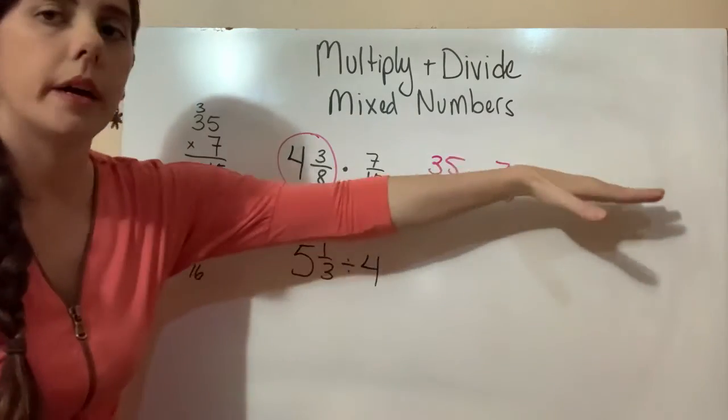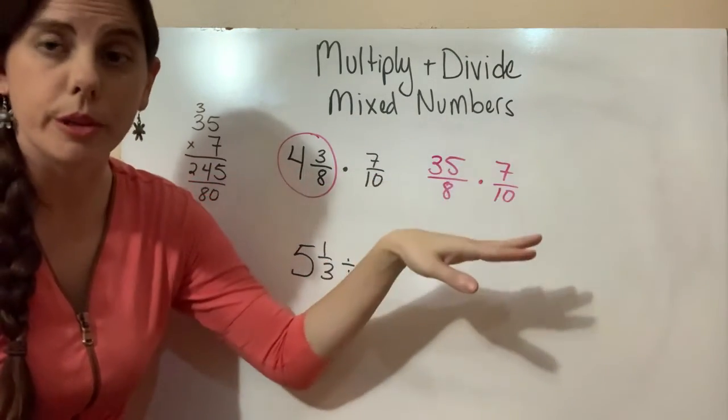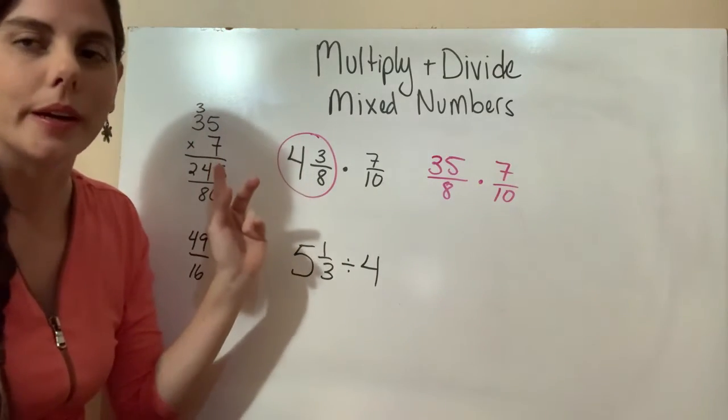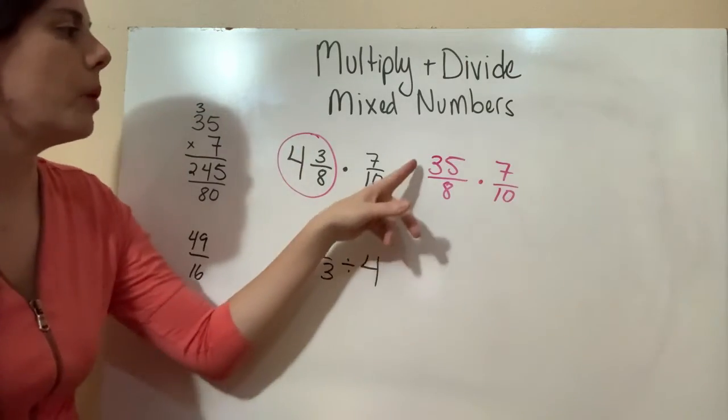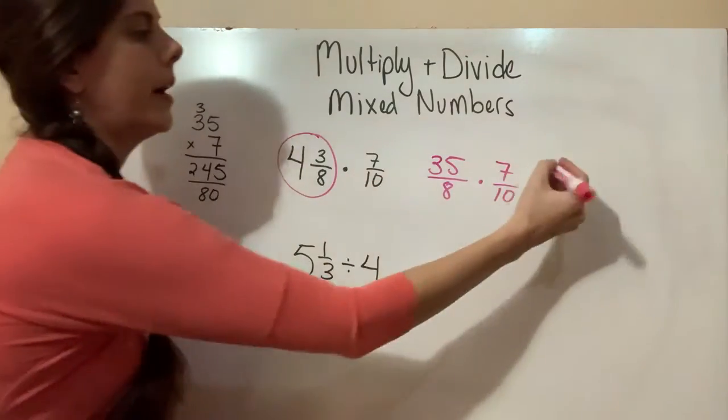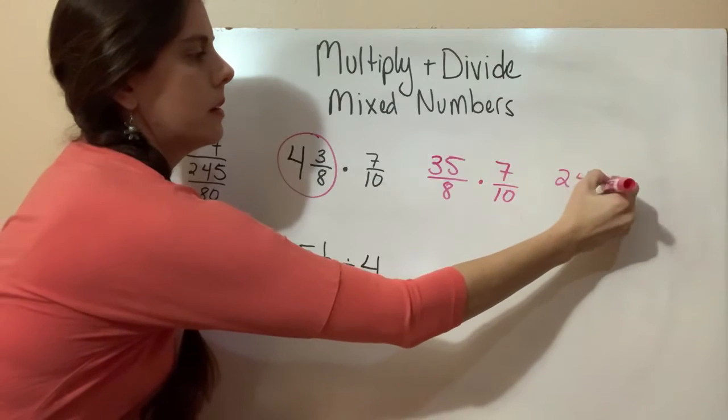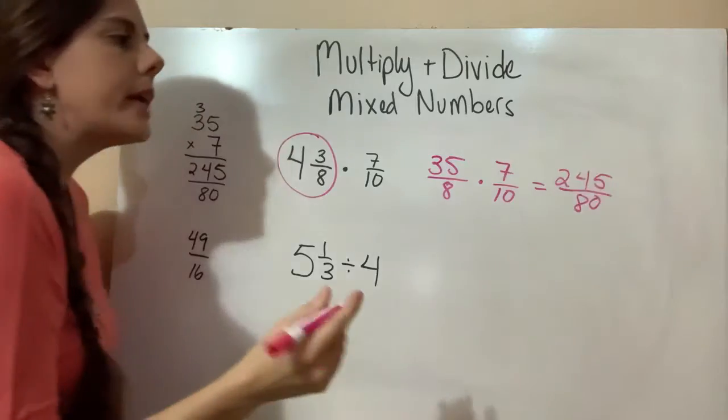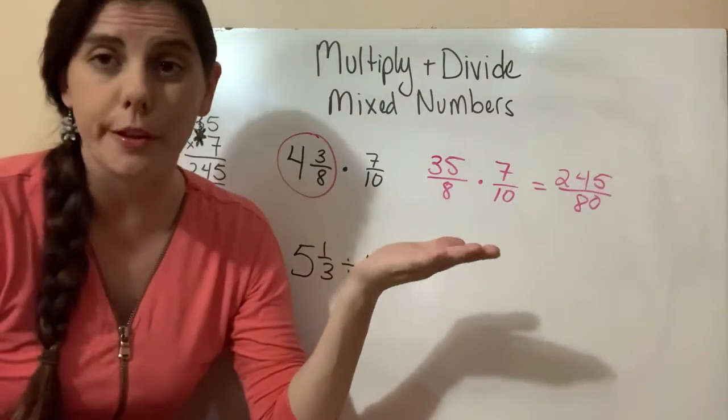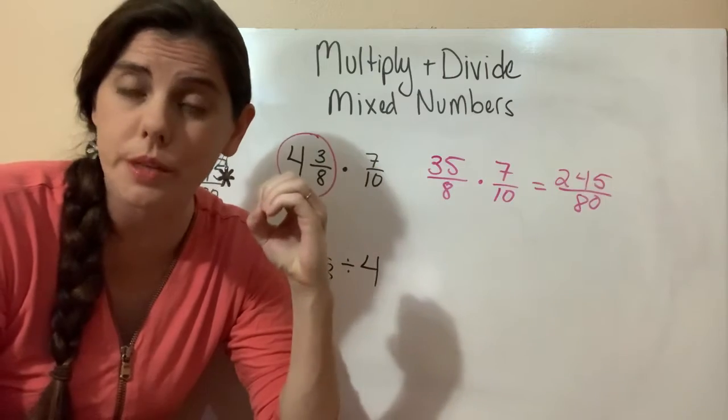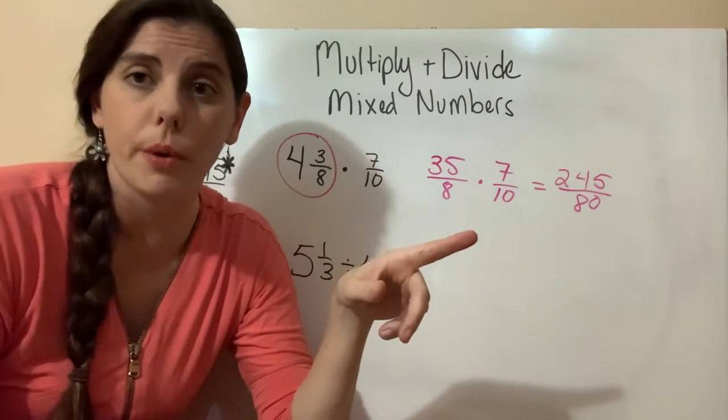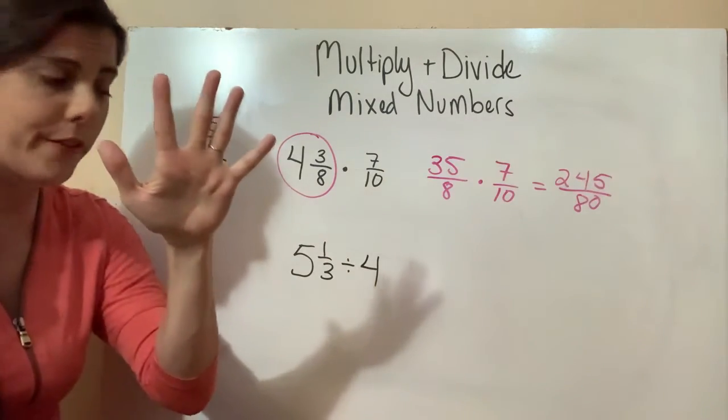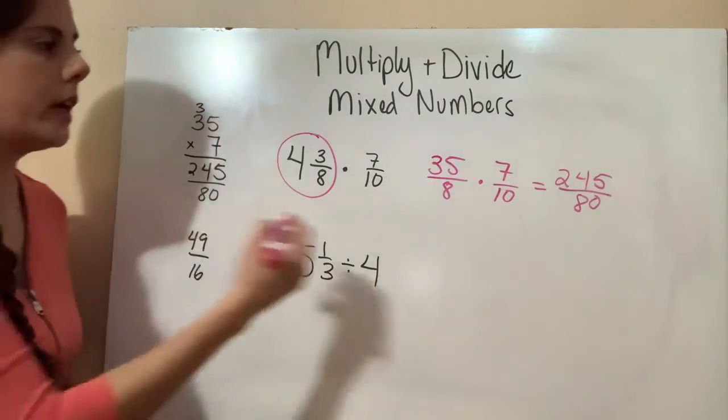Now we can multiply across the top and multiply across the bottom and reduce if possible. I went ahead and did my calculations before I started the video. We would do 35 times 7 which gives us 245, and on the bottom 8 times 10 is 80. We can reduce that because both of those are divisible by 5. Any number that ends in a 5 or a 0, you can always divide both of them by 5. So I divided 245 and 80, both by 5.